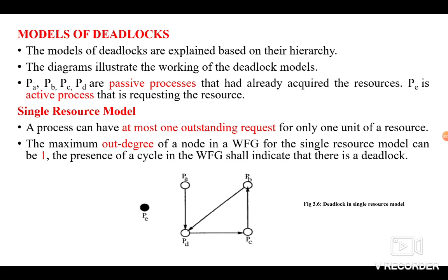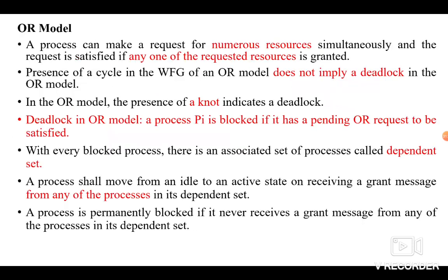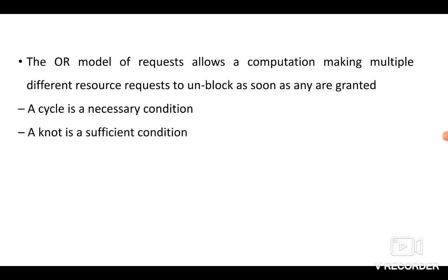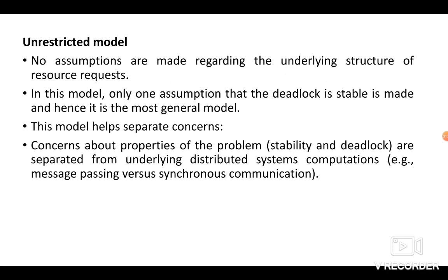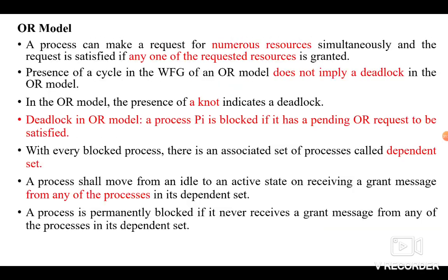The models of deadlocks are explained based on their hierarchy. Assume we have five processes: PA, PB, PC, PD are passive processes, and we have only one active process named PE that is requesting the resource. The models for detecting deadlock are: the Single Resource Model, the AND Model, the OR Model, the P-out-of-Q Model, and the Unrestricted Model.